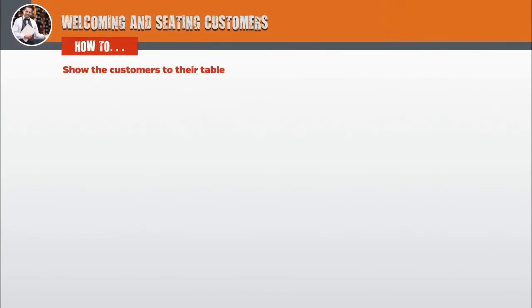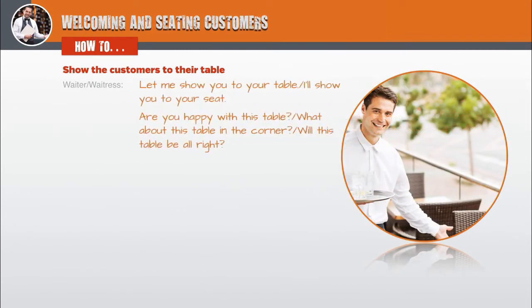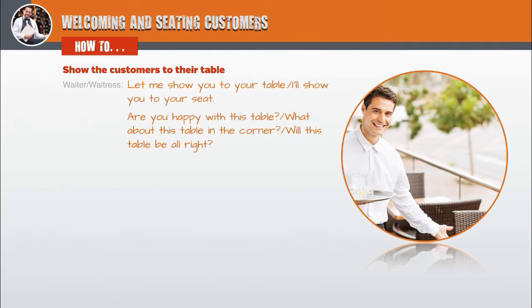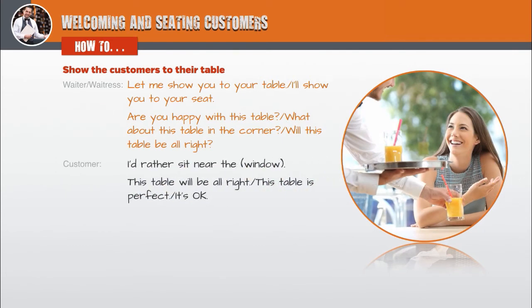How to show the customers to their table. Waiter, waitress: Let me show you to your table. I'll show you to your seat. Are you happy with this table? What about this table in the corner? Will this table be alright? Customer: I'd rather sit near the window. This table will be alright. This table is perfect. It's okay.